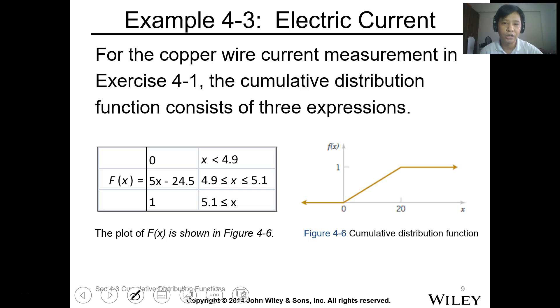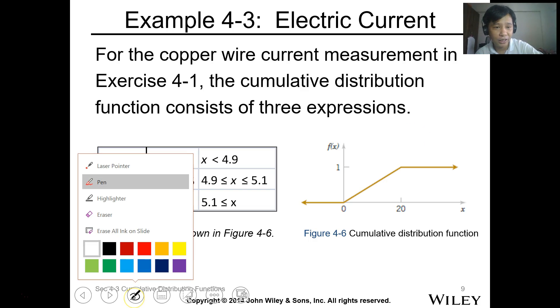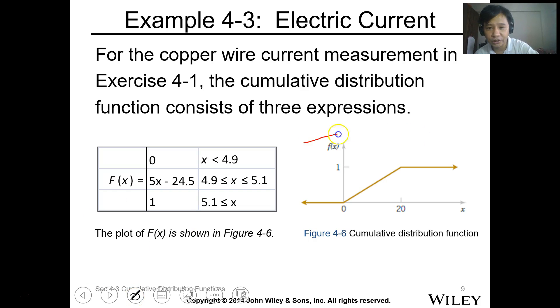So from this one, you know that the value for the F of X capital, or the cumulative distribution function of the current measurement, is 5X minus 24.5 from 4.9 to 5.1. So pag tinignan nyo siya sa graphical representation, ito siya. When the value is less than 0, 0 yung value.